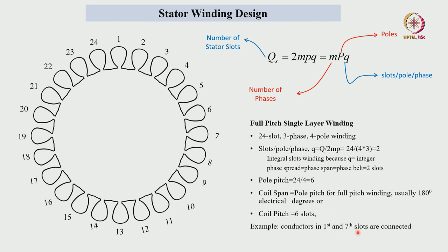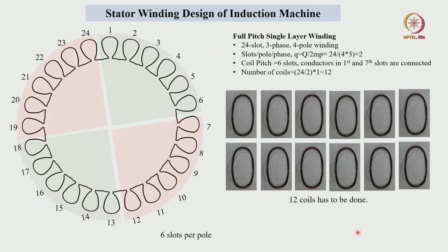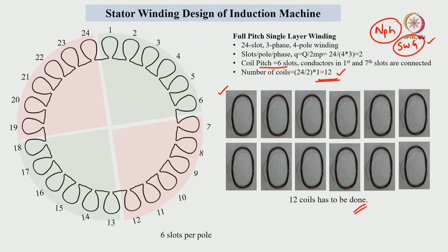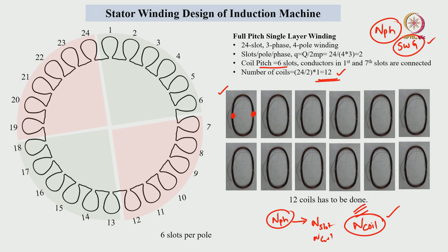The conductors in the first and second slots are connected. As a first step, we calculate the number of turns per phase from Faraday's law and calculate the wire SWG. After knowing these, we find that 12 coils are required. These 12 coils each have a coil pitch of 6 slots. Given the number of turns per slot, n_phase is the total turns per phase, and n_slot or n_coil are the conductors per slot.